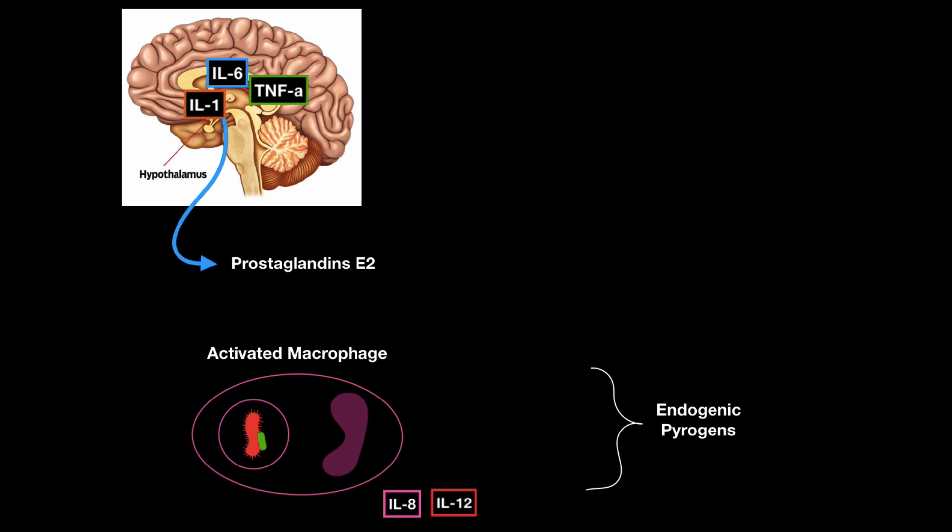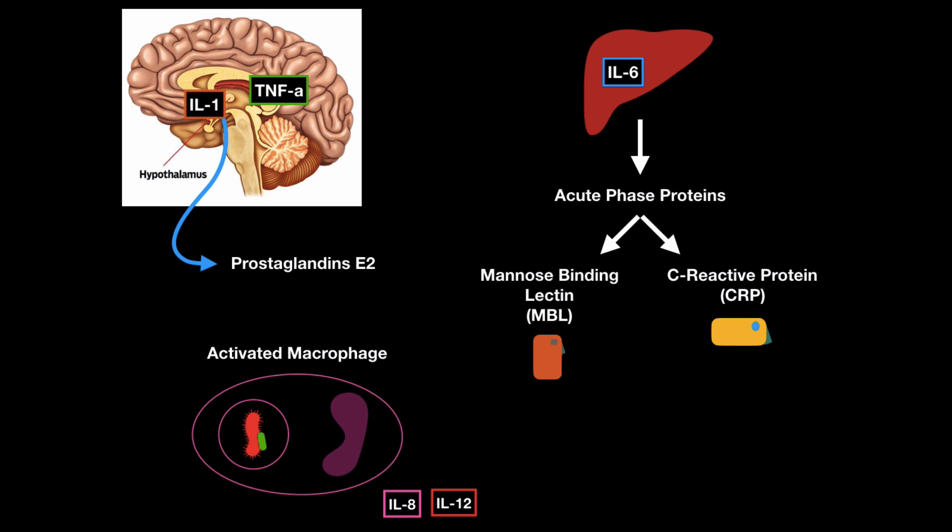Another systemic response is the liver. Interleukin-6 can actually travel to the liver also and trigger the release of acute phase proteins, like mannose-binding lectin, for example, or C-reactive protein. I'll talk more about these in detail when I talk about the complement system, because these are very related to the complement system and they assist in opsonization and also killing of bacteria.